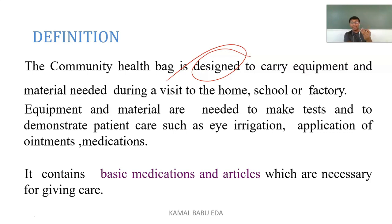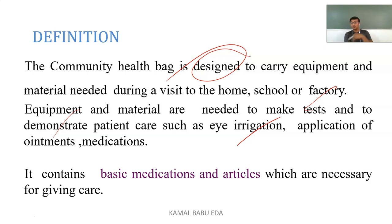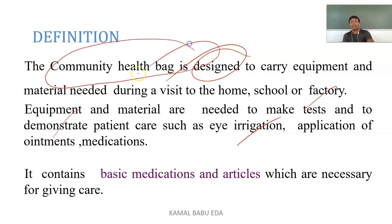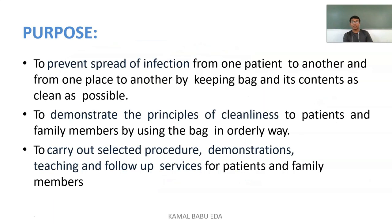The equipment and material in the bag are mainly needed for making tests and demonstrating to patients. For example, if you want to demonstrate eye irrigation, show how to apply an ointment, or show how to take medication, you need some equipment to teach the patient. These items are carried by the nurse in a specially designed community health bag, which contains the basic medications and articles necessary for giving care.